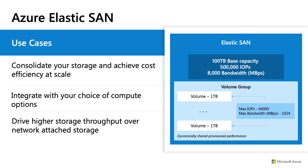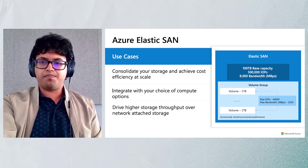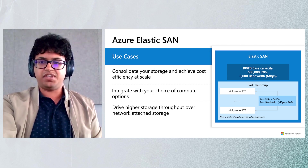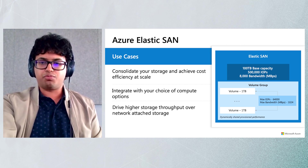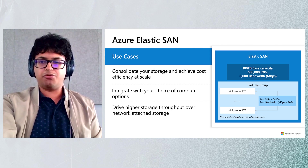Finally, we drive higher storage throughput over network-attached storage. When you have a workload that requires high throughput, you might run into the limits of the disk throughput on your VM. For example, a standard E104IS V5 VM is capped at 120,000 IOPS and 4,000 Mbps. But for your quarter-end reporting, you may need very high throughput. With Azure Elastic SAN, you can drive throughput over the VM network bandwidth, which is not limited on IOPS, and where your throughput can go up to as high as 12,500 Mbps.